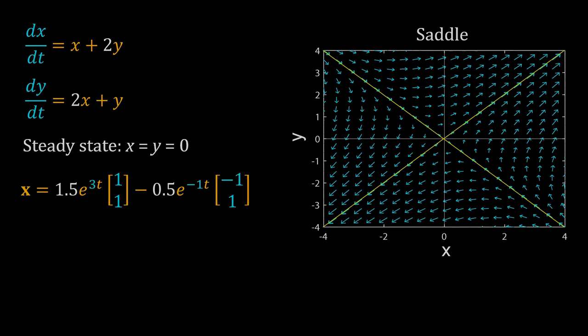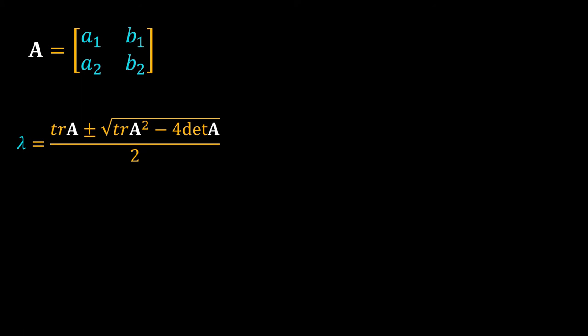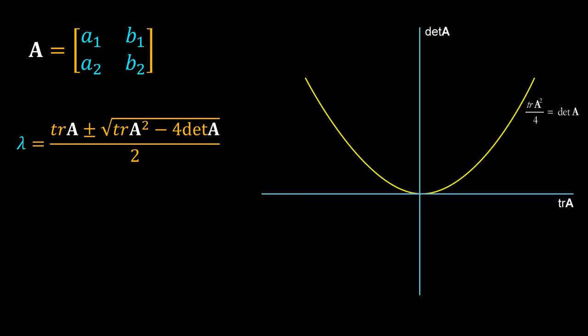In fact, the system we analyzed in the last video is an example of a saddle — one eigenvalue is plus three and the other is negative one. For a two-dimensional system it is very easy to calculate the eigenvalues. For a coefficient matrix A, lambda equals trace(A) plus or minus the square root of trace(A) squared minus four times det(A), all divided by two. So the sign of lambda depends upon the trace and determinant of A.